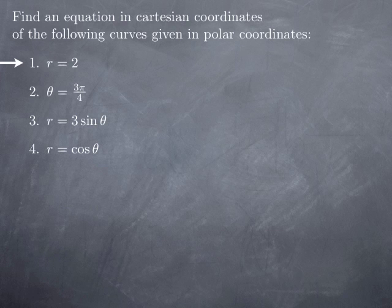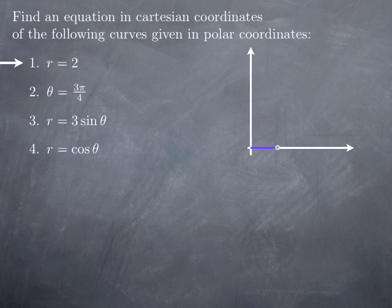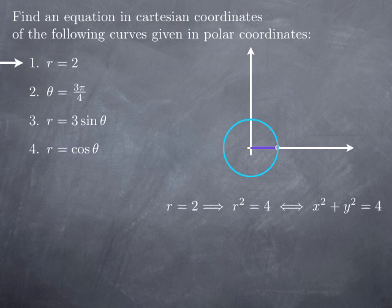So r equals 2 — geometrically it's quite clear what that is: it's the set of points at distance 2 from the pole. If we're in a polar system attached to Cartesian coordinates, this is r=2 and θ=0. As θ changes, the point turns around and traces out a circle centered at the origin of radius 2. The equation is x²+y²=4, since r²=x²+y².